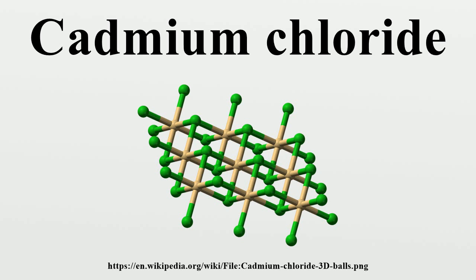Cadmium iodide, CdI2, has a very similar crystal structure to CdCl2. The individual layers in the two structures are identical, but in CdCl2 the chloride ions are arranged in a CCP lattice, whereas in CdI2 the iodide ions are arranged in an HCP lattice.